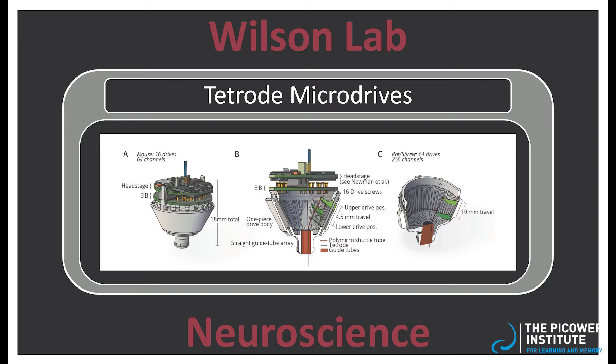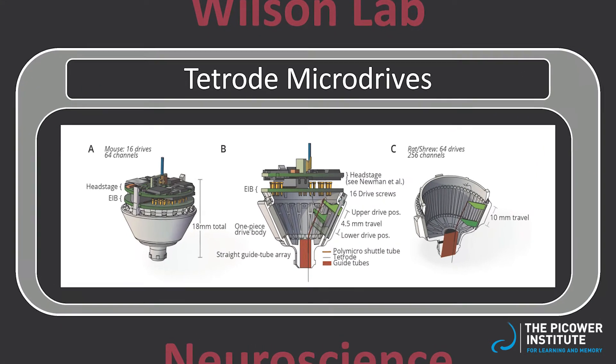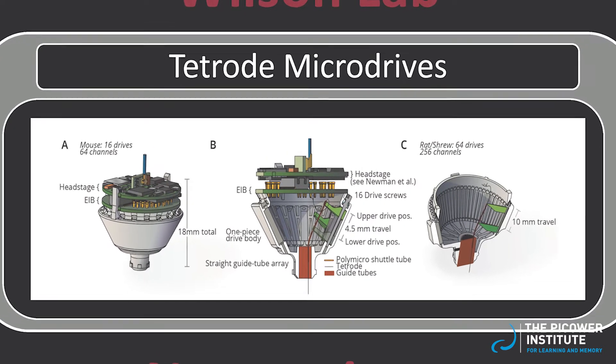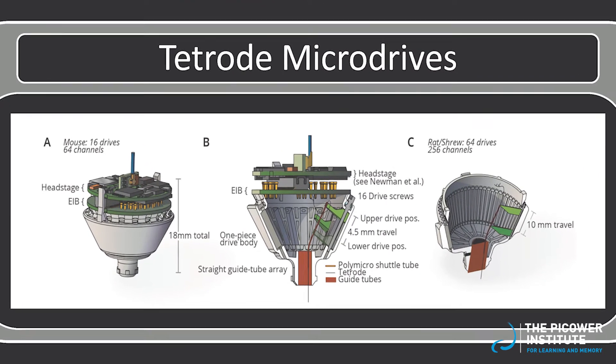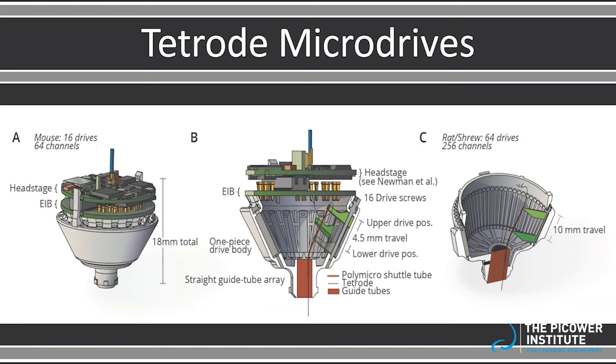The tetrodes are then loaded into a microdrive. The microdrives currently used by the lab were designed by Jacob Voiz and John Newman, along with Matt Wilson and Mark Harnett. These microdrives can fit up to 64 tetrodes, or 256 channels of electrical activity, and each tetrode can be independently moved up and down within the brain.